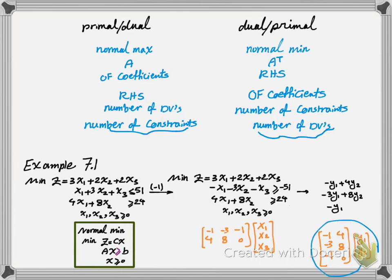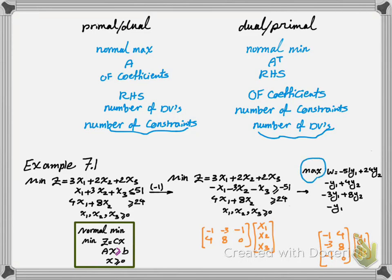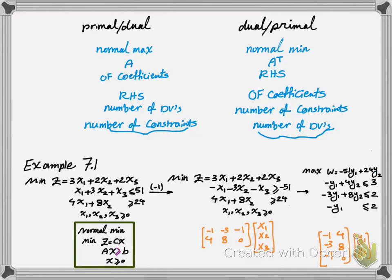So if I do this multiplication, these are the set of equations that I get. Now the next thing is we are writing the dual for a min problem, so it's going to be a normal max problem. For the objective function the coefficient comes from the right hand side, so I have to write it as w equals negative 51 y1 plus 24 y2. Now because it's a max problem and it's going to be normal, everything should be less than or equal in the constraints. The right hand side here comes from your objective function coefficients, so I'm going to write them as 3, 2 and 2.